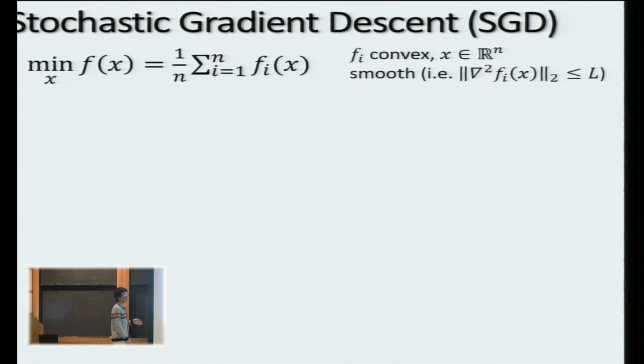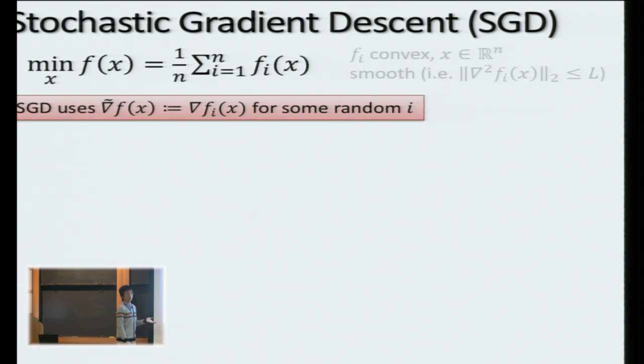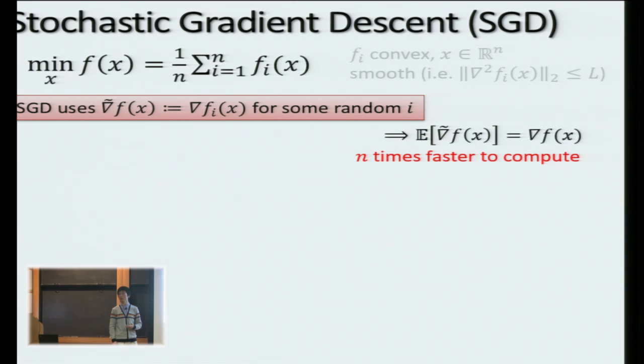In such a case, one typically talks about stochastic gradient descent, meaning that in each iteration, we compute the gradient of a random piece of the function. That is the random fi. For some random i, say, drawn for simplicity uniformly at random between 1 and n. So this is definitely an unbiased estimator of the full gradient of the function. But it's n times cheaper and faster to compute.